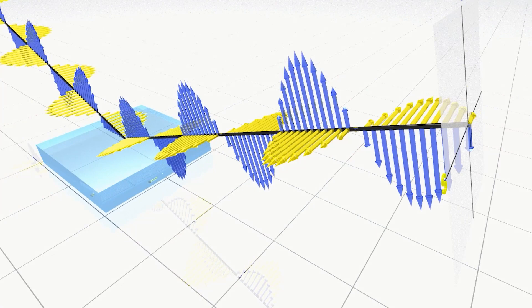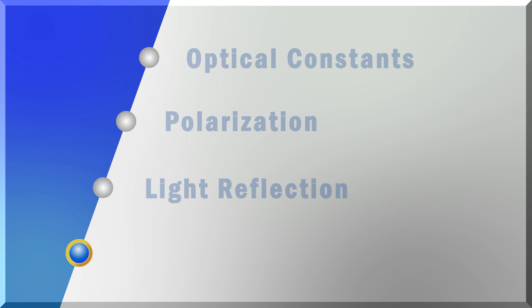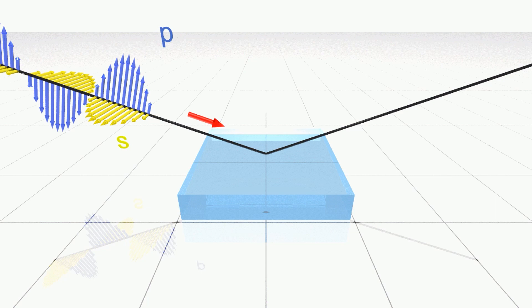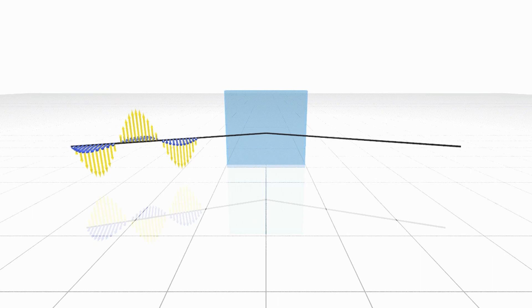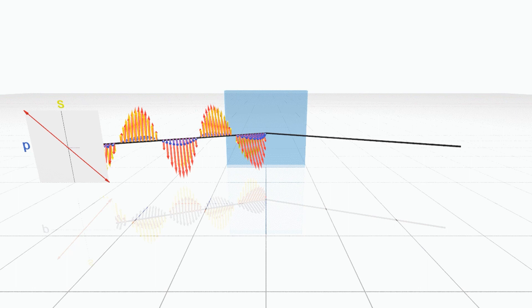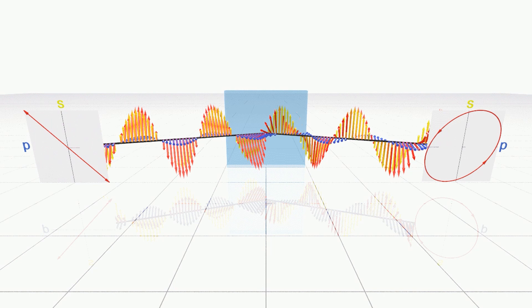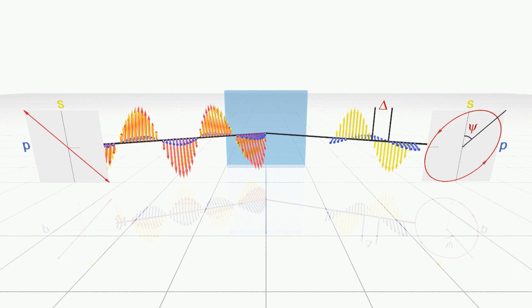These animations show a special case when the incidence p- and s-polarizations are reflected without any change. In ellipsometry, reflection of p- and s-polarization is characterized. In this general configuration, incidence light contains both p- and s-polarizations, so the synthesized vector is a linear polarization inclined at 45 degrees from the plane of incidence. When light is reflected on a sample, p- and s-polarized waves undergo different reflections, and the reflected light shows a different polarization state. Ellipsometry measures two angles, delta and psi, of the reflected light.